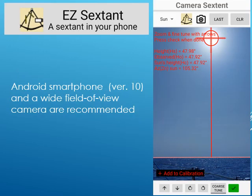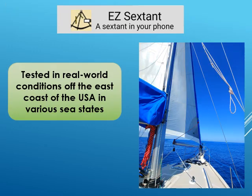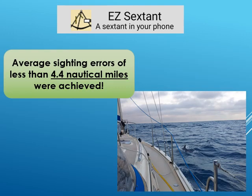Android versions 10 and higher and a camera with a wide field of view are recommended. The app was tested in real-world conditions up to 40 miles off the east coast of the USA on a 38-foot sailboat. Over 100 sightings were made in various sea conditions over a two-year period. Average absolute sighting errors of less than 4.4 nautical miles were achieved, commensurate with sextant navigation.